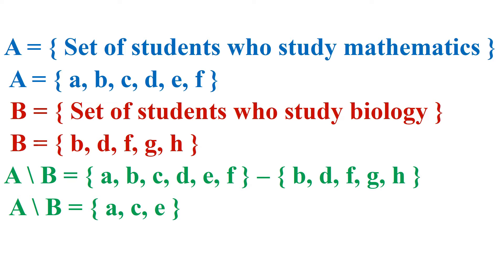Now the answer is A difference B is {A, C, E}. By looking at the elements of A difference B, what observations can be made? All the elements of A difference B — A, C, and E — are included in the first set, set A. None of the elements from set B is present in A difference B. Also A, C and E are not present in set B, and none of the common elements — B, D, and F — are present in A minus B.